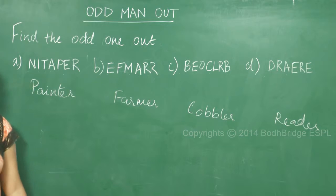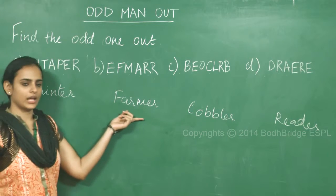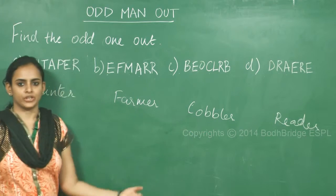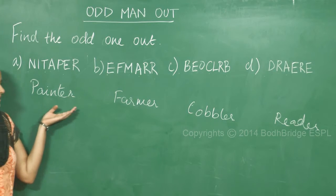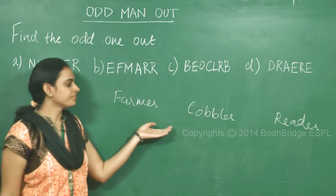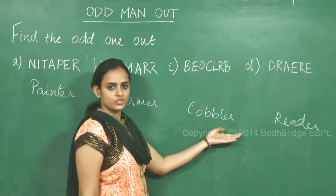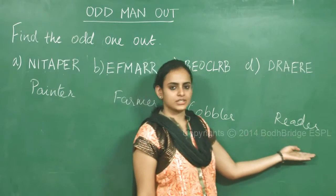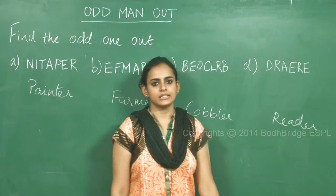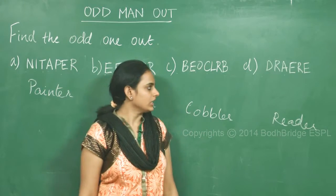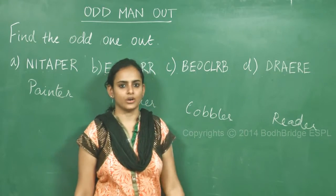Now if we analyze the pattern in each of these options, we can see that painter, farmer, and cobbler are all professions. A painter paints, a farmer works in the farm, and a cobbler mends the shoe. Only reader is not a profession. Hence our answer is option d, reader, which is the odd one out.